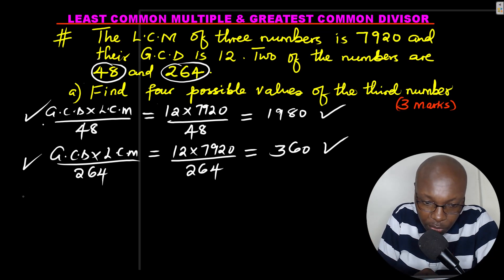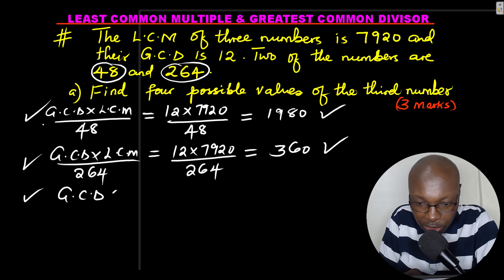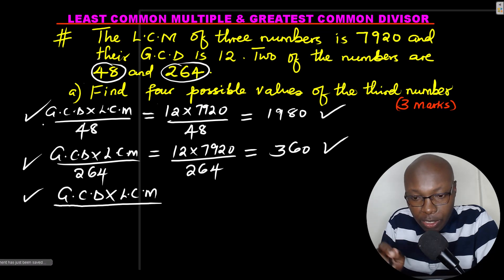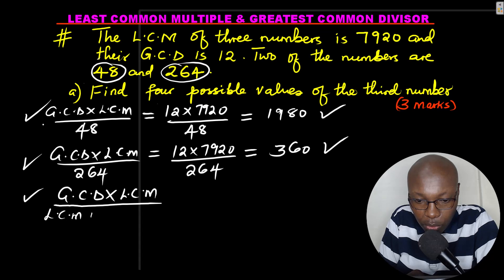The other one, you're required to give 4. The other one, you still use the same formula, just change something slightly here. GCD times LCM. Then you need to be very careful. You divide by the LCM, the least common multiple of the two numbers given. The two numbers given are 48 and 264.